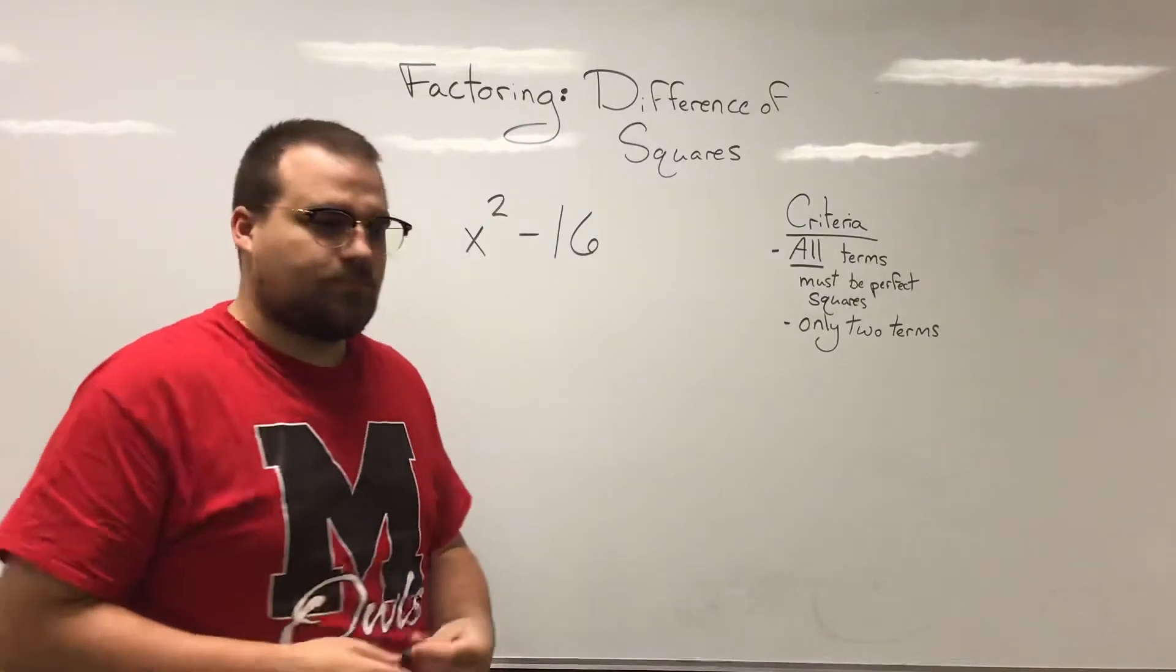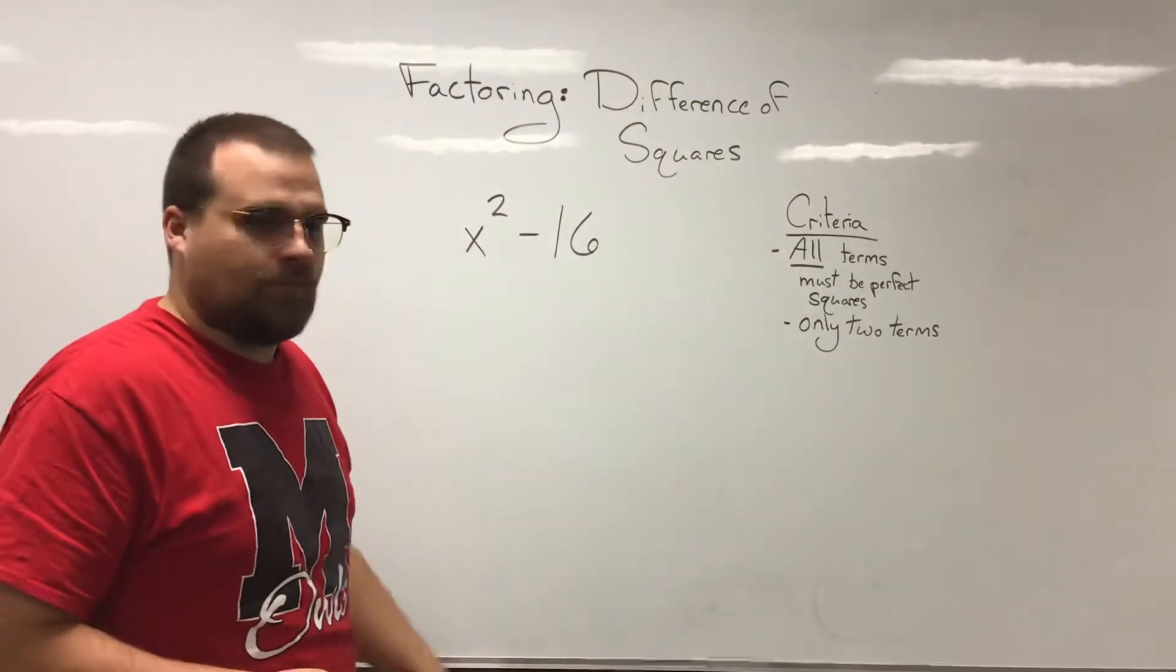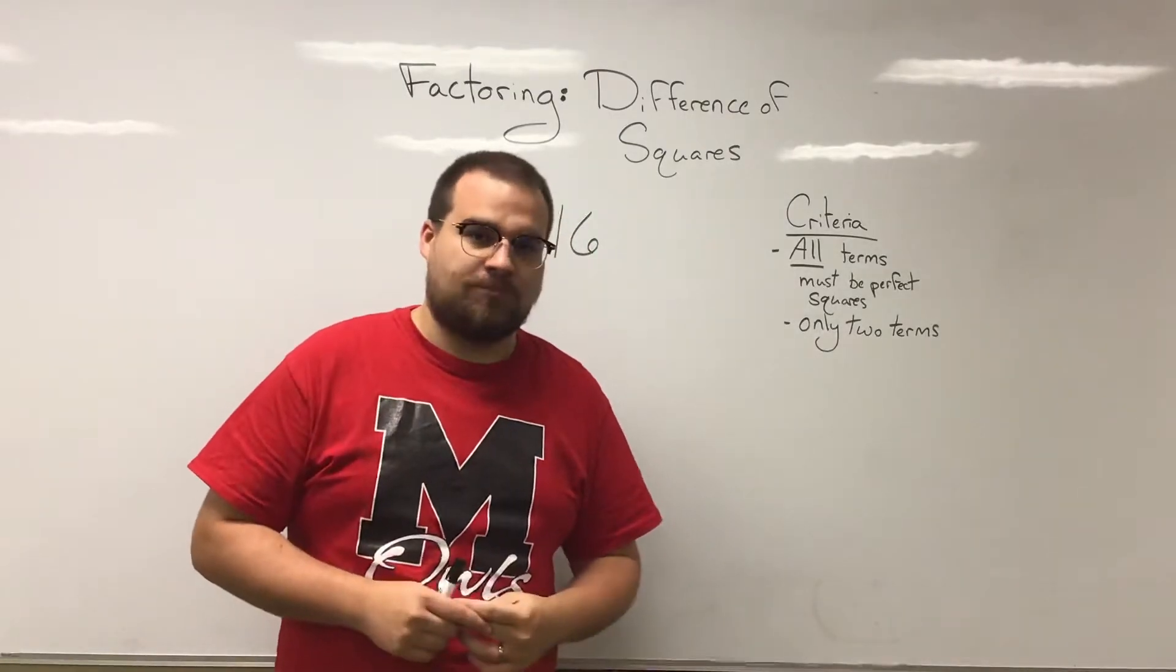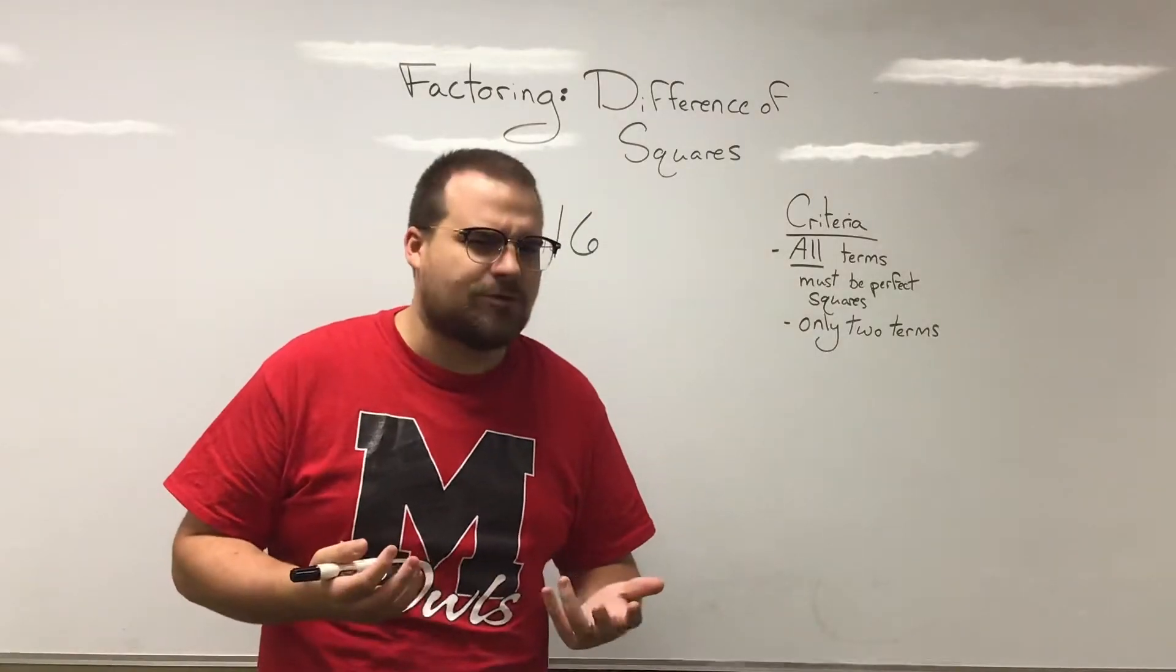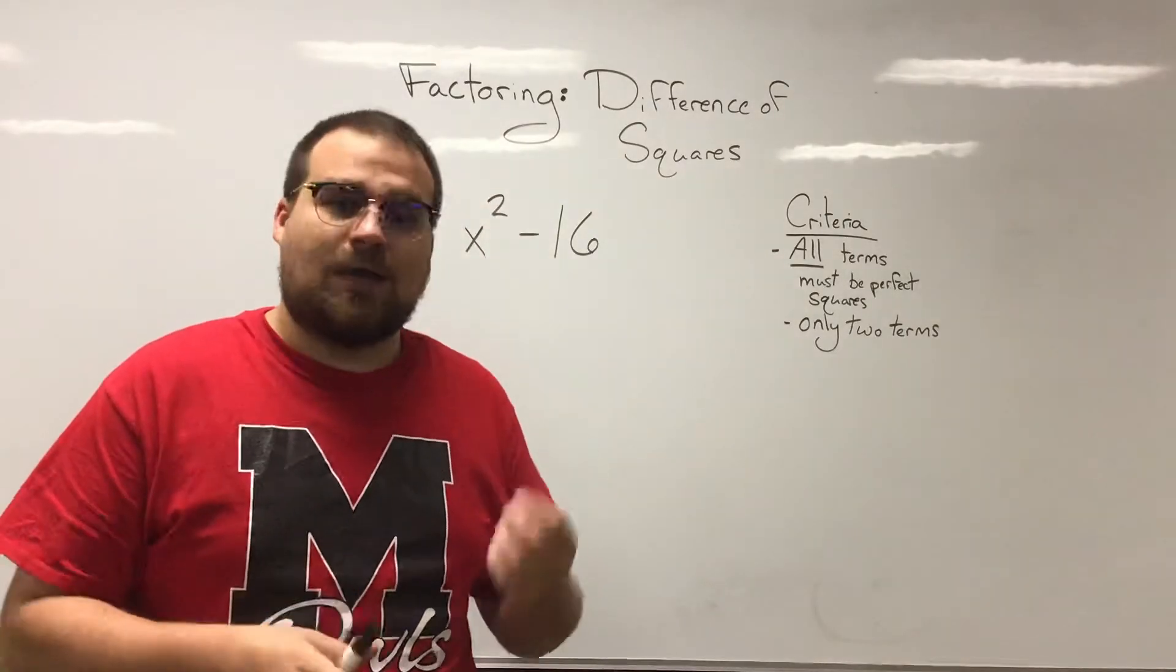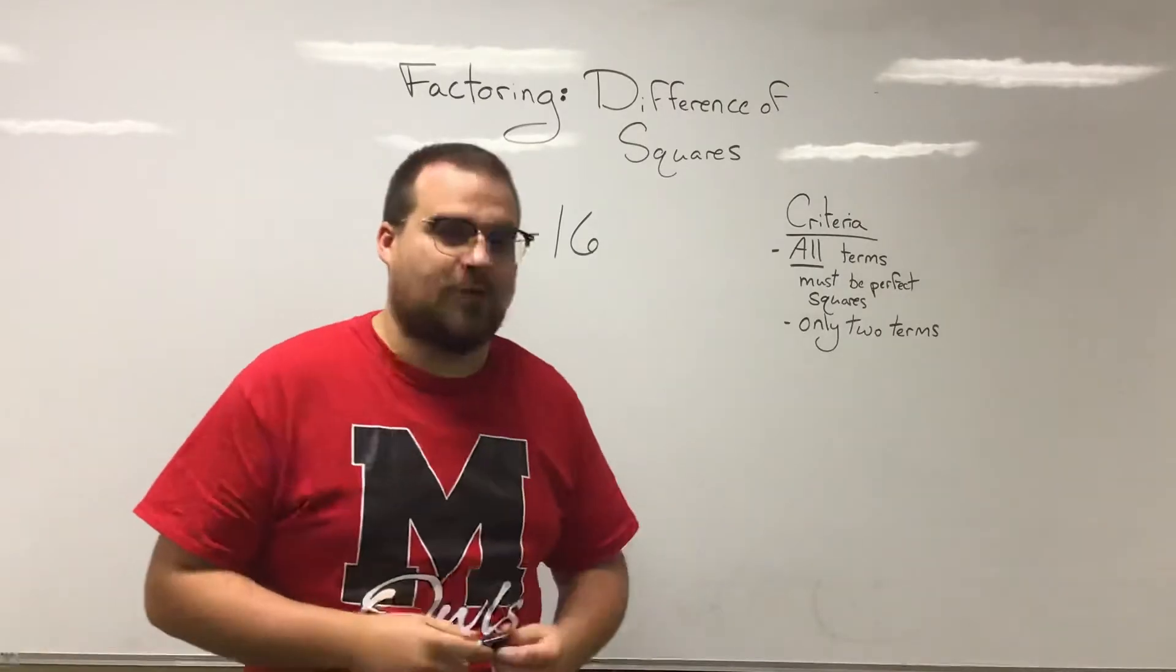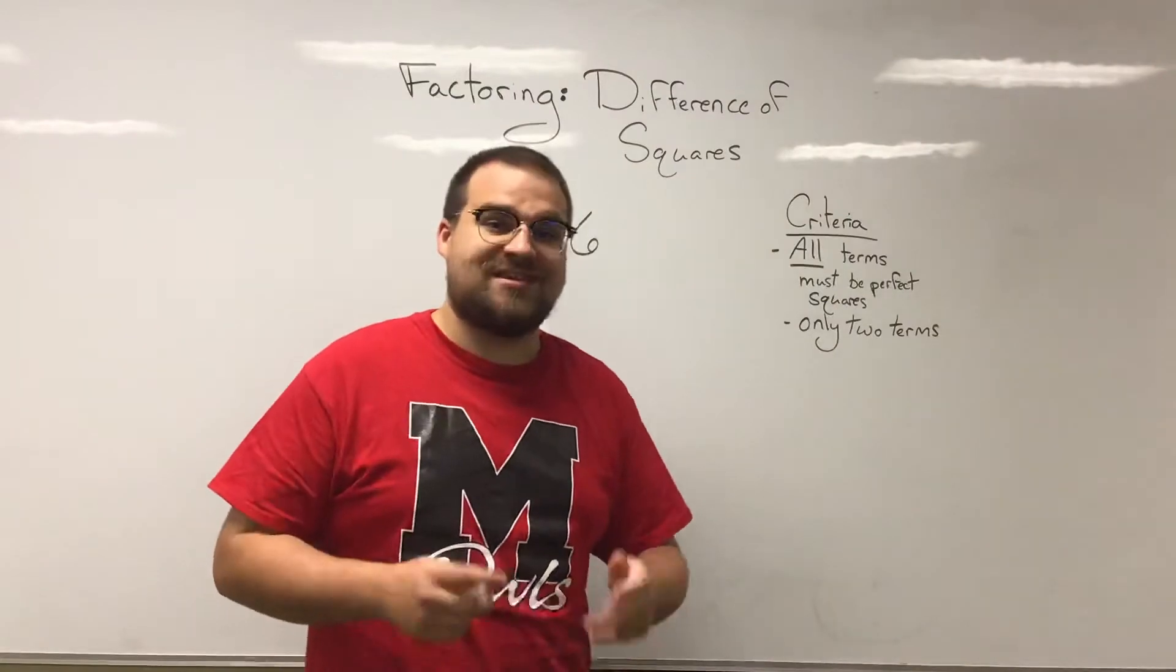So the idea is we have a two-term binomial and every term here is a perfect square. 16 is a perfect square. Let's kind of ignore that minus sign in front of it. And then we have x squared as well. Now that one may be a little bit more difficult to think about. Is x squared a perfect square? We don't usually think about perfect squares in terms of variables. However, x squared is the same thing as x times x. It's what you get whenever you multiply x by itself. So yeah, it is a perfect square. Any variable squared is a perfect square.